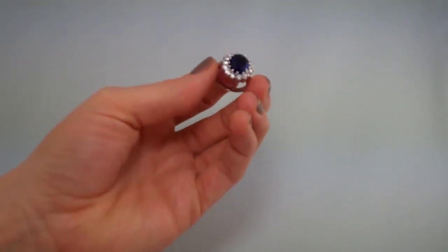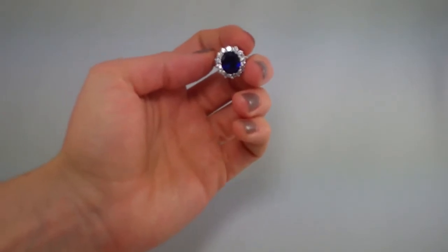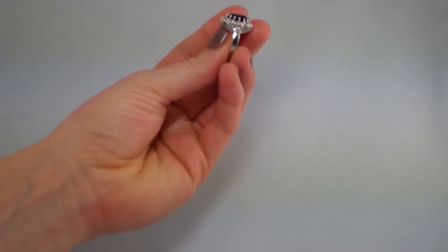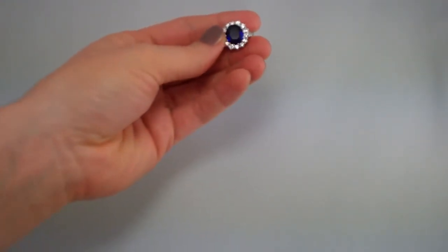You can see it's really pretty and sparkly. It's a sapphire in the center surrounded by a halo of small Austrian crystals and the entire ring is white gold plated. So great quality, just not the same price that you usually get for solid gold.